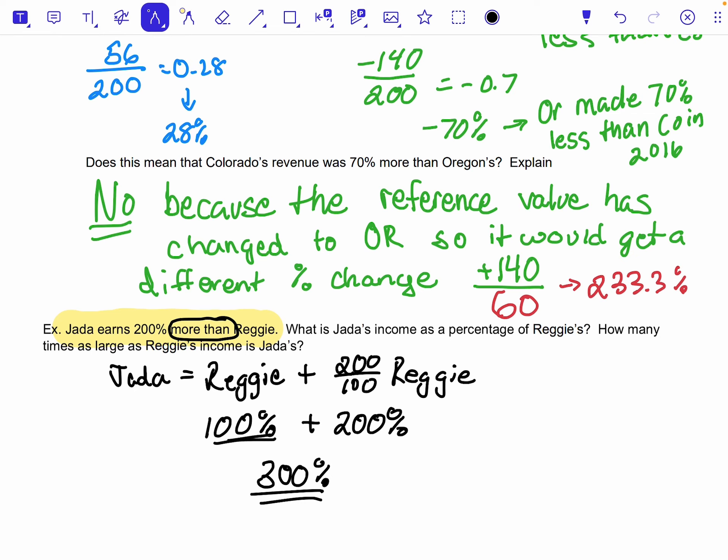So Jada's income is 300% of Reggie's. So Jada's is 300% of Reggie's. And that's sort of in thinking about how percentages are working.